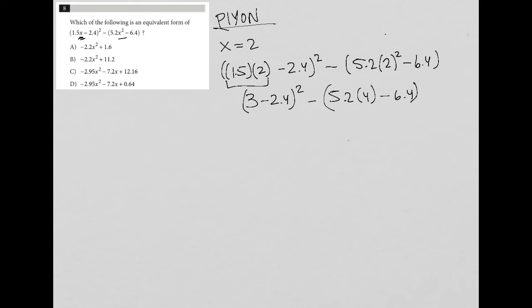Continue on. 3 minus 2.4 is 0.6. So I have 0.6 squared. 5.2 times 4 is 20.8. So 20.8 minus 6.4.